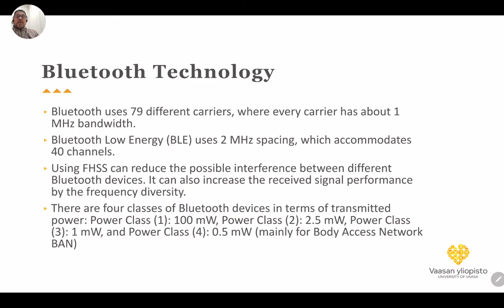Regarding transmission power, there are four classes of Bluetooth devices: power class 1 at 100 mW, power class 2 at 2.5 mW, power class 3 at 1 mW, and power class 4 at 0.5 mW. Power class 4 is mainly used for Body Area Networks (BAN).